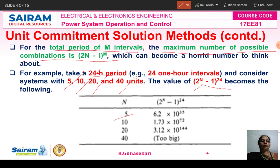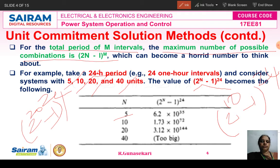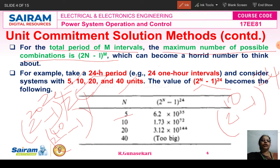So the basic formula is (2^N − 1)^M. Here M = 24, and N = 5, 10, 20, 40. These are very large numbers — they are the upper bounds for the number of enumerations required. The constraints on the units and the load capacity relationship of typical utility systems are such that we do not approach these large numbers.